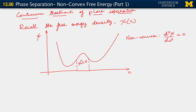How does this work? Let's label the concentration at the first minimum as c_alpha, and that at the second minimum as c_beta. For future use, I'm also going to define c_gamma, which is one half of the difference between c_beta and c_alpha.